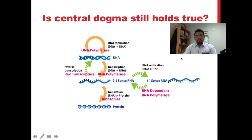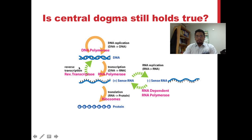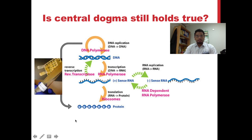However, recent advances in the field of molecular biology have highlighted some defects in the model, and some processes in living systems have been seen to violate the principle, thus challenging the central dogmatic view. Today we know that DNA can not only make new copies of DNA through replication — sometimes it can also direct the formation of protein through translation without making an intermediate RNA molecule.